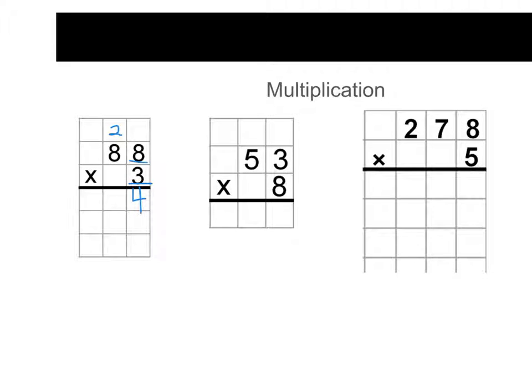So now when we do 8 ones times, I'm sorry, 3 ones times 8 tens, 3 times 4 is 24. We're going to add 2, and we get 26. So now we actually have 264 because we multiplied 88 times 3.